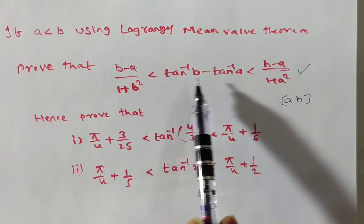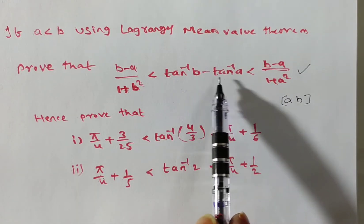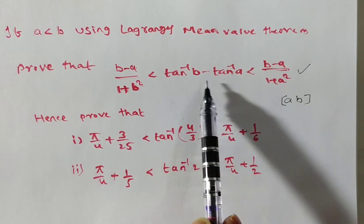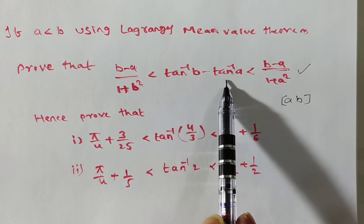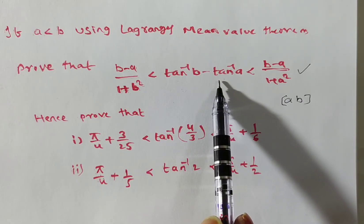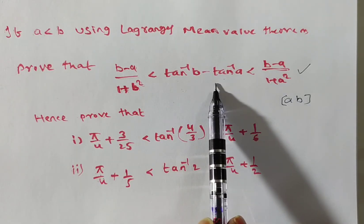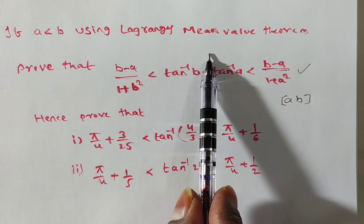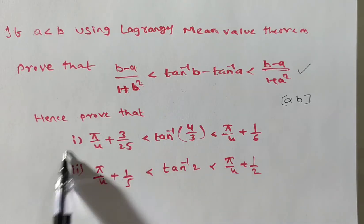Observe: tan inverse b minus tan inverse a — they are not given specific values, only a and b. These are arbitrary constants; finite values are not given. So on the interval (a, b) we have to prove this. We apply Lagrange's mean value theorem, and from this we have to deduce two inequalities.